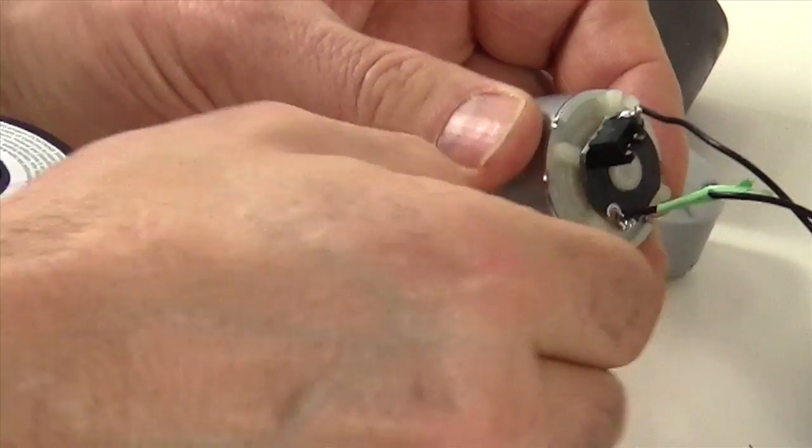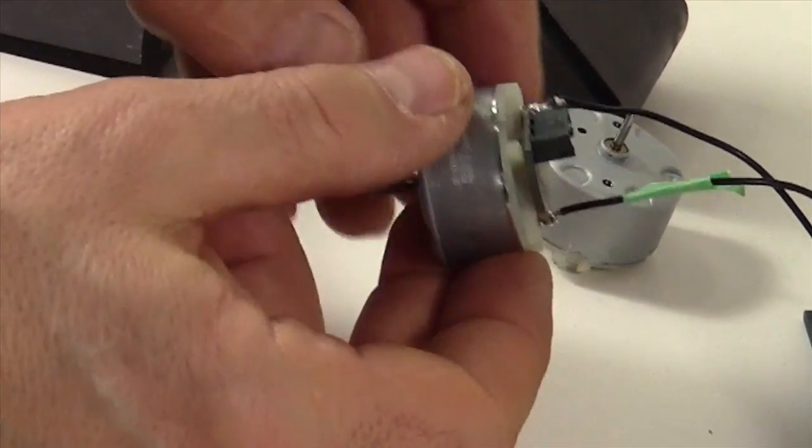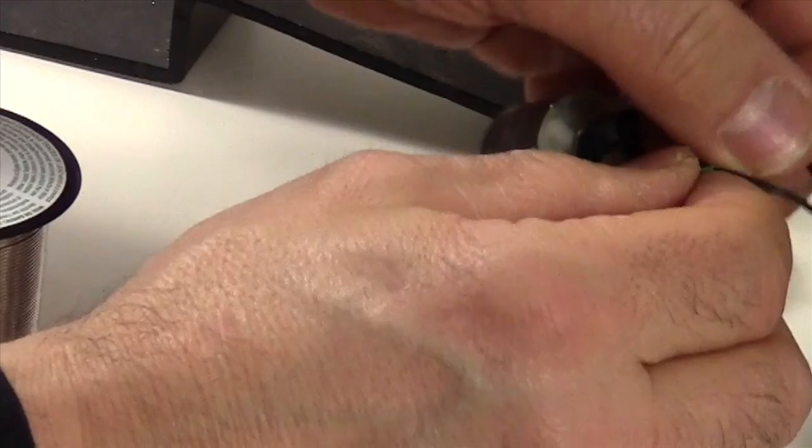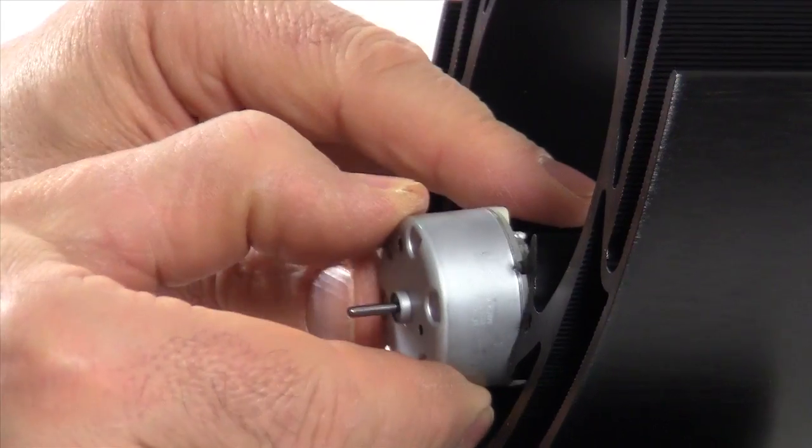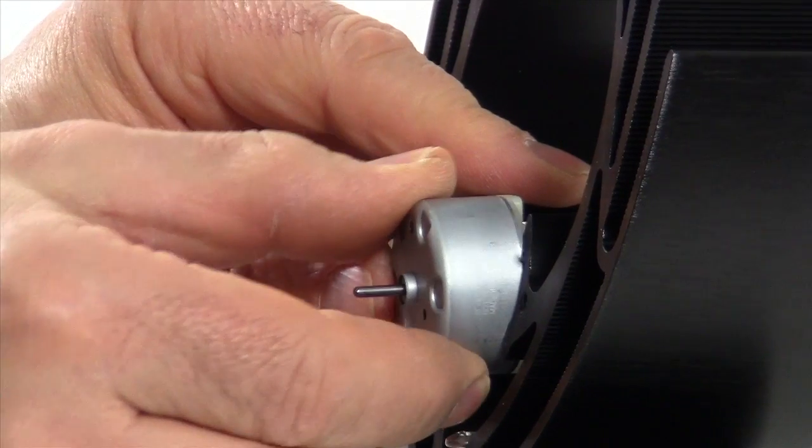Check the wires to make sure they're secure. And now we can remove the piece of tape. Now we can simply slip the motor into place.